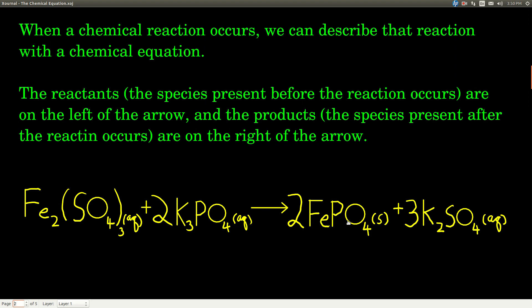Everything that's on the right-hand side of the arrow, well, that's what's there after the reaction happens. Those are called products. So reactants on the left, products on the right.